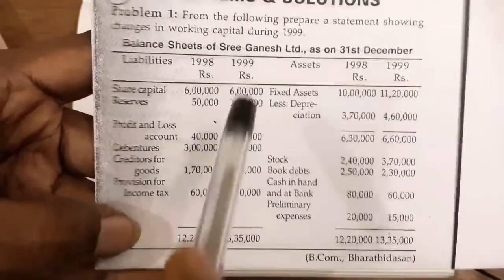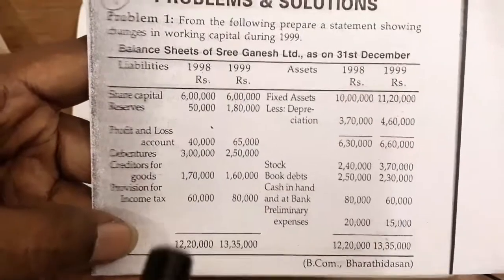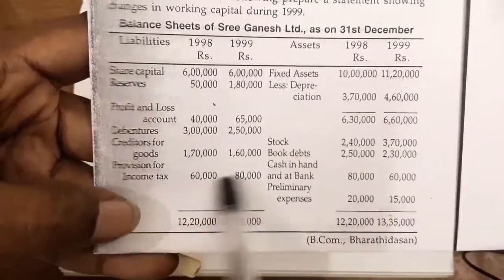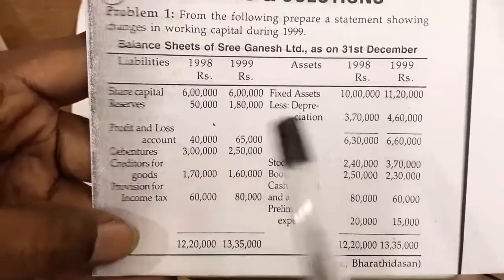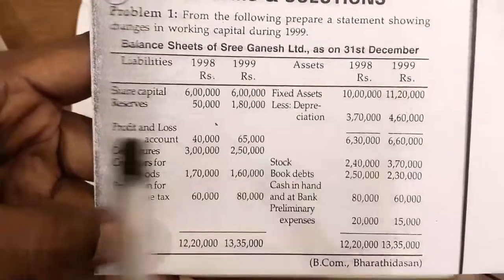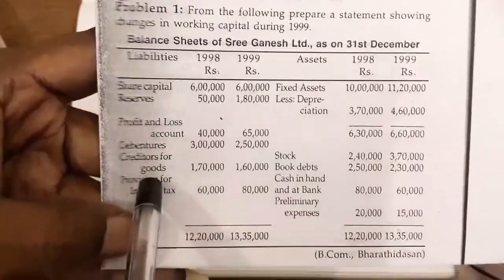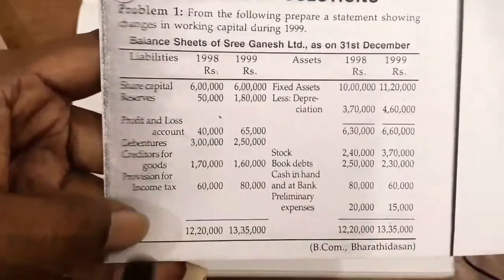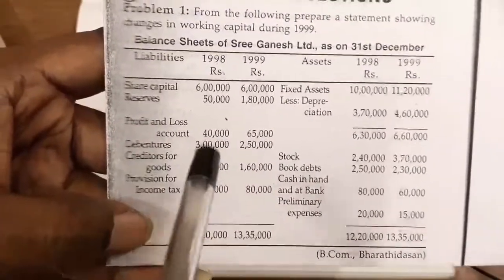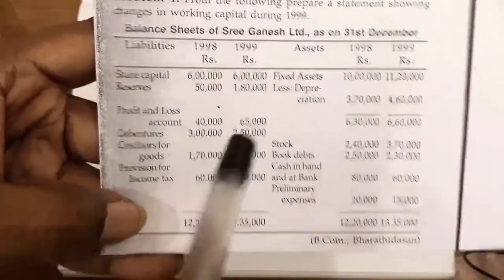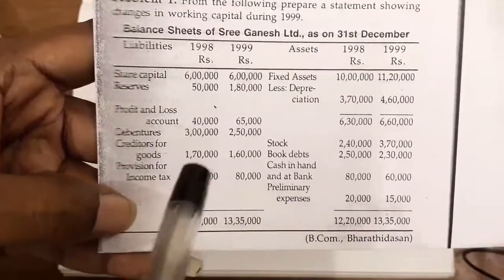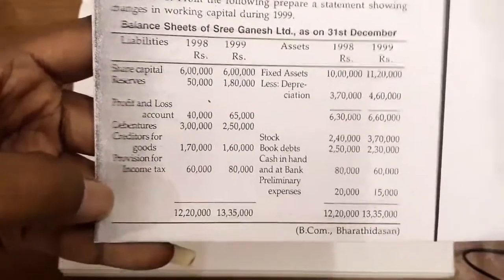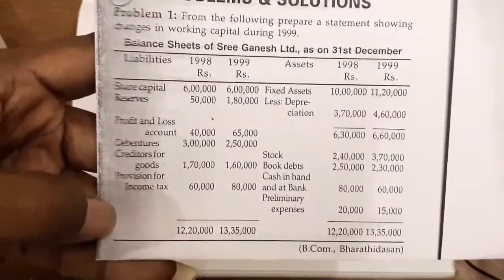The main focus is on current assets and current liabilities. We will take all items — fixed assets, depreciation, profit, etc. — but our main concern is current assets and current liabilities. Let's look at how we can calculate working capital.